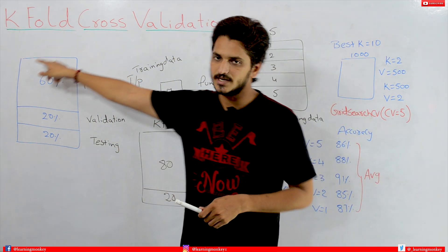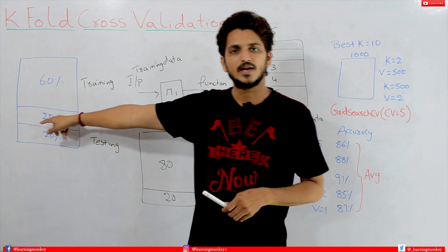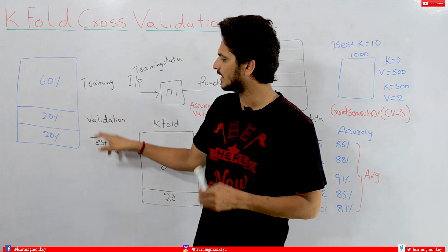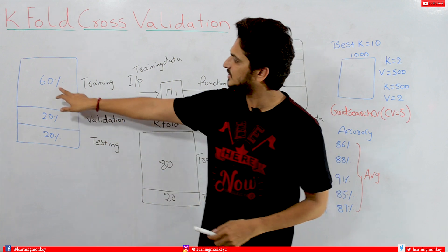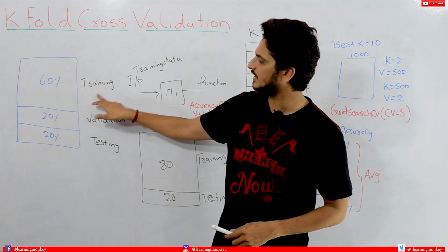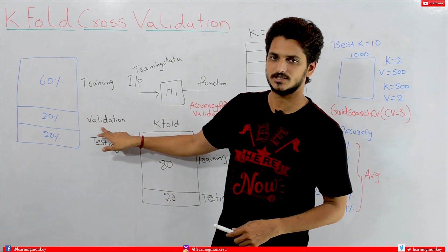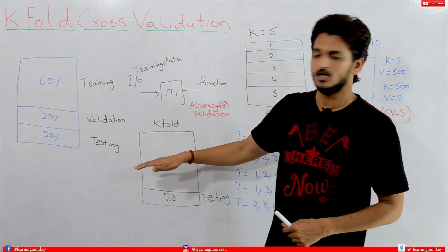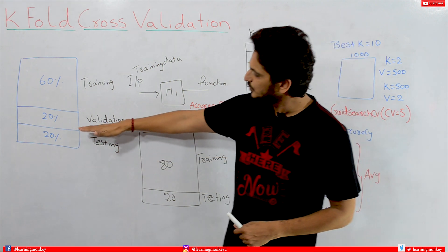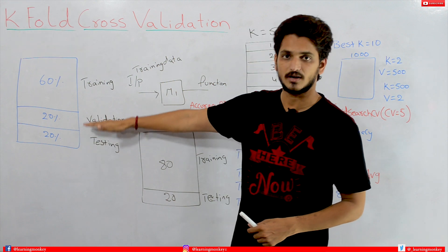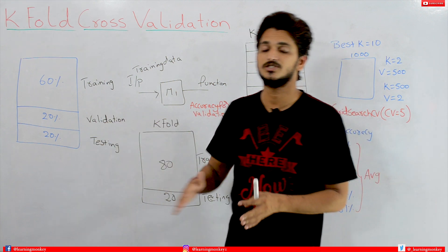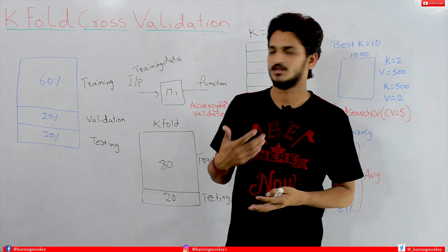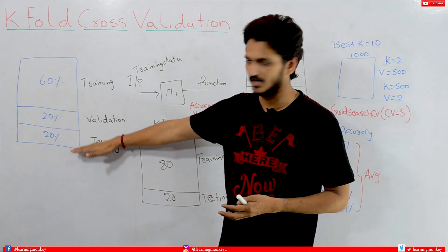Suppose this is our dataset. Our dataset will be divided into 3 parts: training part, validation part, and testing part. 60% of the data is taken for training, 20% for validation, and 20% for testing. We don't use the testing data during the training phase, because the testing data should be unseen by the model during training.